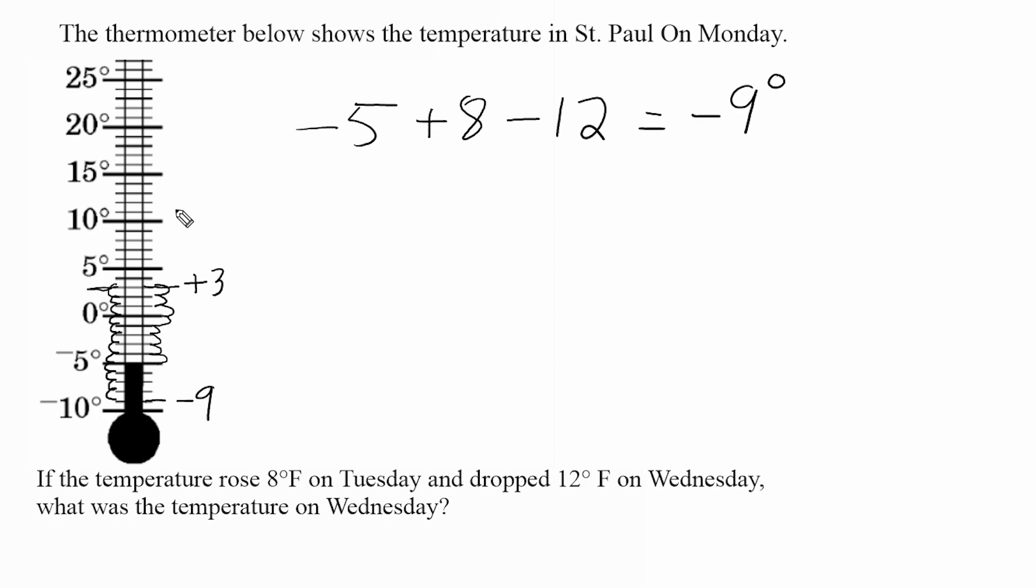Now you didn't really have to use the number line in this case. What we could have done is just used these three integers right here without referring to this thermometer. We could have just taken the negative integers and combined those. Remember, you have to add integers with the same sign and keep that sign. So negative five and negative twelve is negative seventeen.